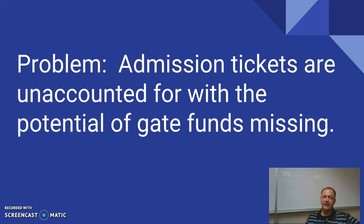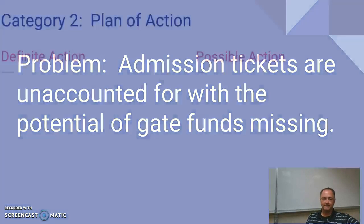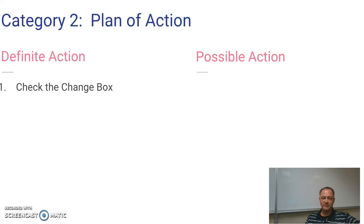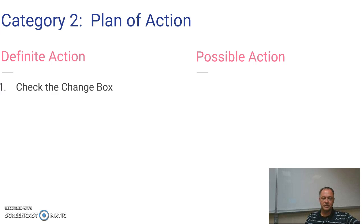Our overall problem is that admission tickets are unaccounted for with the potential of gate funds missing. No matter what happens, there are some definite things that need to occur. First, I need to check the change box — that would be the easiest, best solution. If I find an additional $50 bill and the total amount remains the same, problem solved. All we have to do is address the idea of accounting for those tickets every night, and there would be no harm — just some general retraining needed.